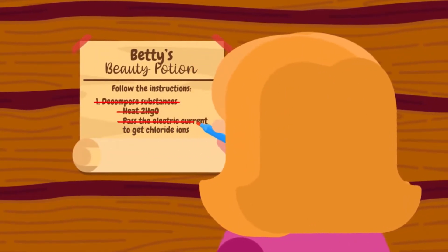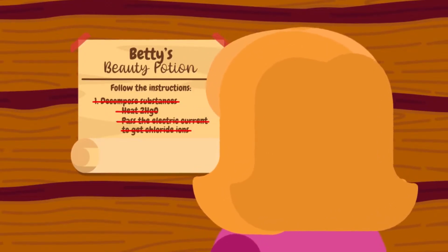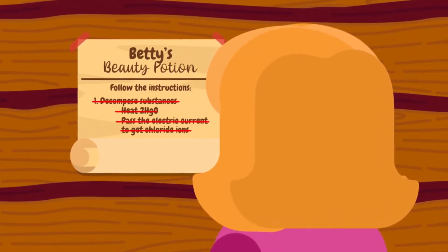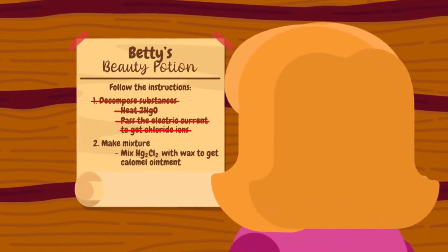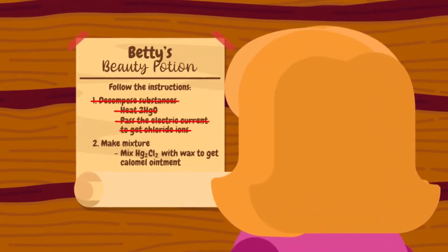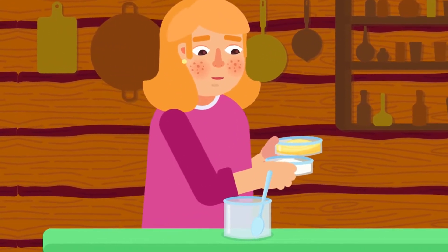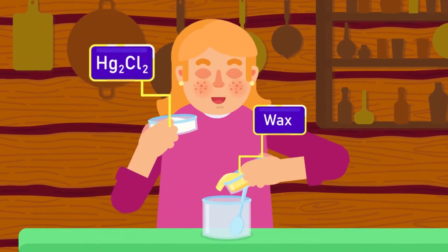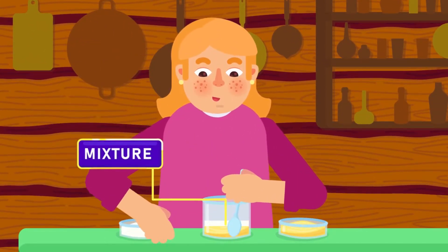Now you understand how to separate the elements of a compound. But what happens when we mix two or more compounds? A combination of two or more different substances without any chemical reaction will form a mixture.